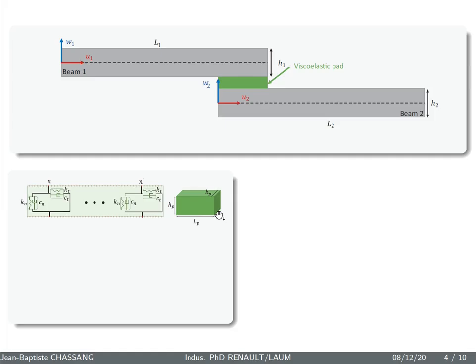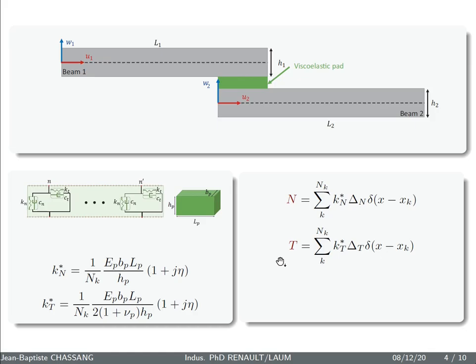Now let's add a viscoelastic pad. This pad is described using a combination of Kelvin-Voigt with stiffness and damping according to the characteristics of the pad. As we are in harmonic regime, the damping is expressed according to a ratio eta directly in the Young modulus. This stiffness becomes complex.